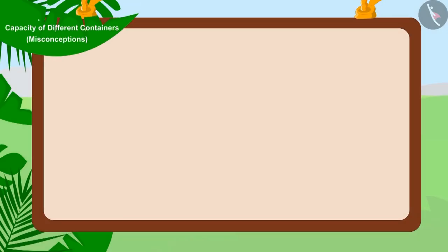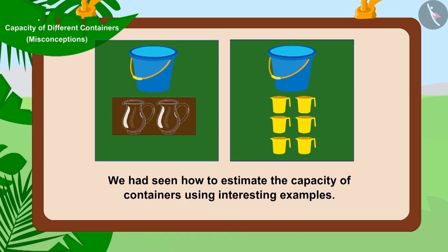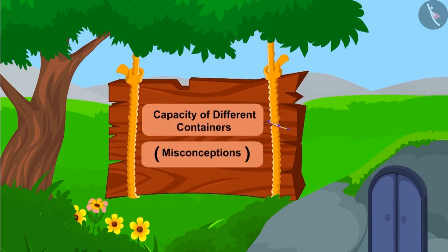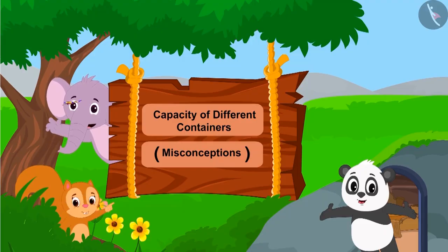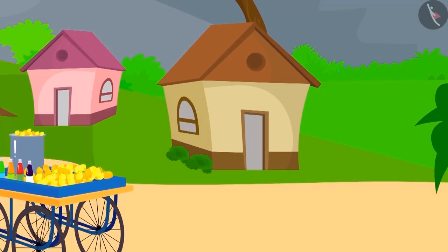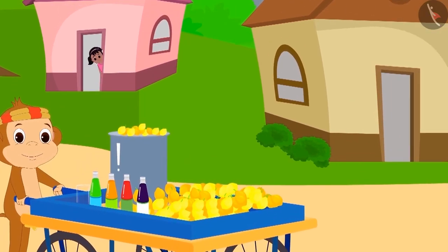Hello children! In the last video we learned about how to estimate the capacity of containers using interesting examples. In this video we will see some misconceptions related to this. Lemonade for sale! Kala khatta for sale! Babban the lemonade vendor shouts.